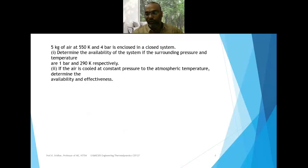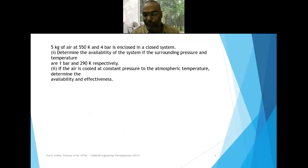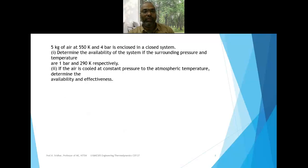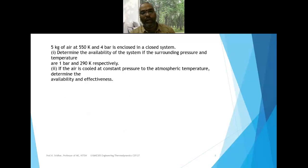Now let us look at an application of availability applied to a steady flow process. Five kilograms of air at 550 K and 4 bar is enclosed in a closed system. Determine the availability of the system if the surrounding pressure and temperature are 1 bar and 290 K respectively. In the second case, if the air is cooled at constant pressure to atmospheric temperature, determine the availability and effectiveness.